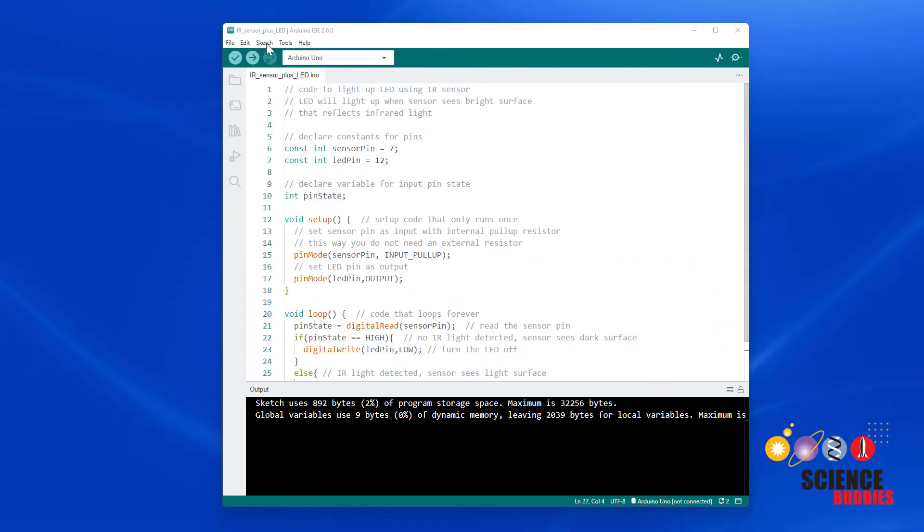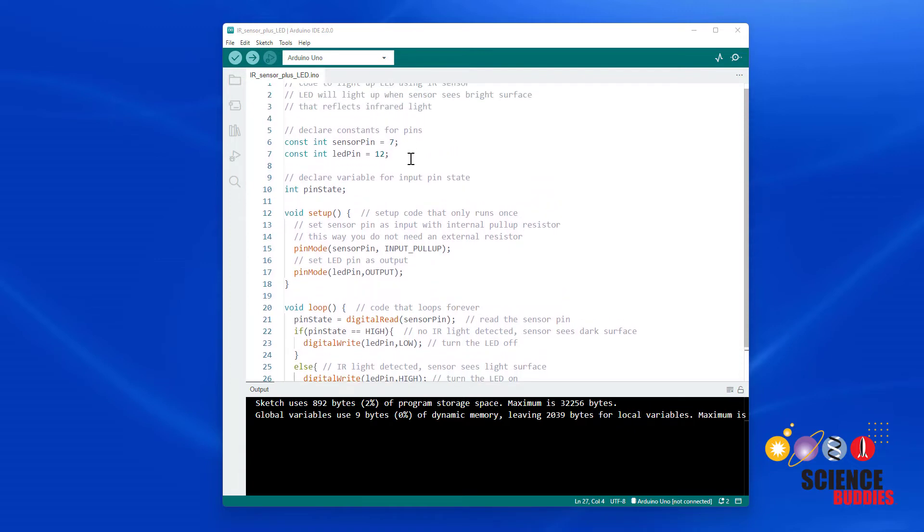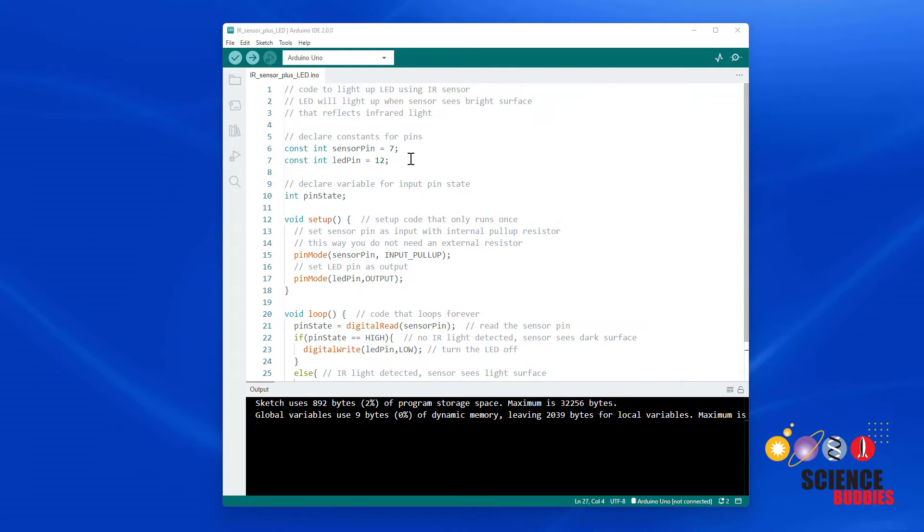Now let's switch over to the Arduino IDE and look at the code we're going to use with this sensor. Now don't worry if you found wiring the sensor intimidating. The code is nearly identical to what you have used before to control an LED with a button. Let's take a look at it line by line.